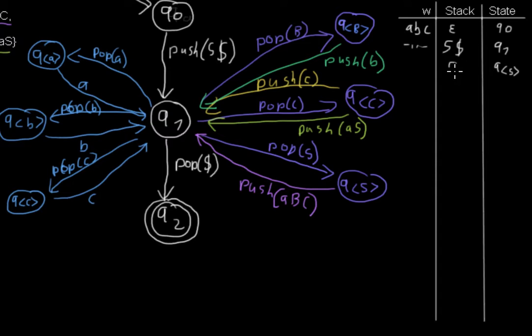Now we read S from the stack so only the dollar sign is left, and then the only thing we can do is follow this transition and push abc onto the stack. Now we have abc dollar and we are back to q1.